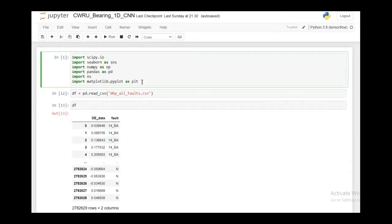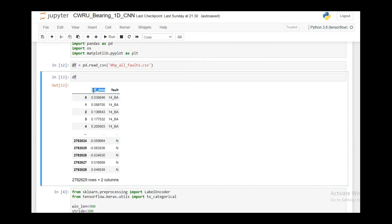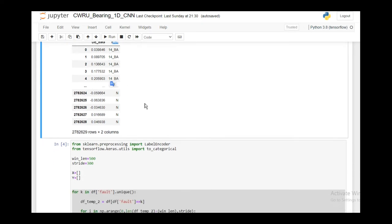Now that the method is clear, let's see the code implementation for it. In the first block I'll import all the necessary libraries. Then I'll import the dataset from zero zero load condition, zero horsepower load condition into my dataframe. My dataframe looks something like this where I have all the acceleration data on the left column and all the fault types in the right one.